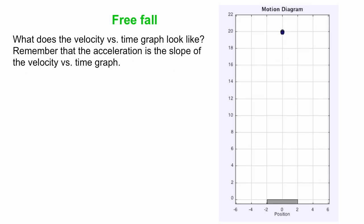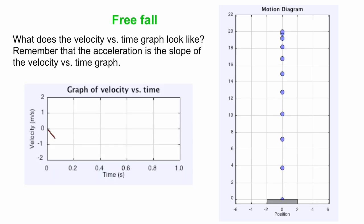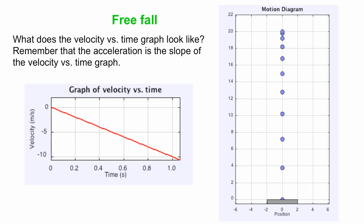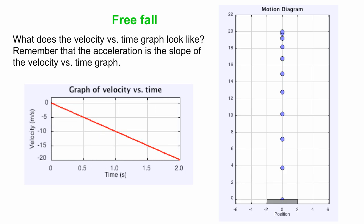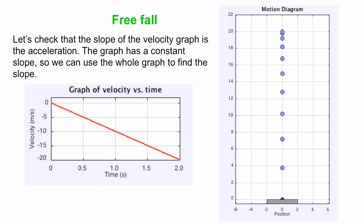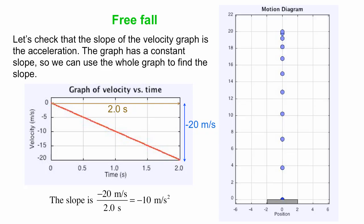Now let's look at the velocity versus time graph for the same motion. Here's our constant-slope graph of velocity versus time — the velocity changes at a constant rate, so the slope is constant. We can check that the slope of the velocity graph equals the acceleration: the slope is rise over run, which is minus 20 meters per second divided by 2 seconds, giving minus 10 meters per second squared — which corresponds to the acceleration. Graphs tell us a lot about velocity, change in velocity, and acceleration.